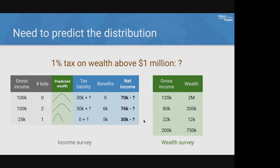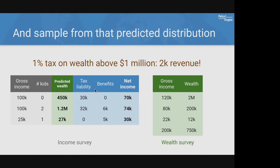What we really want is to estimate the distribution — the conditional distribution of wealth given the features you have. You predict some bell curve, possibly skewed or with spikes, based on the wealth survey. If you then sample randomly from that predicted distribution, you get predicted wealth values that vary: some households fall below the threshold, some fall above, capturing records that differ from the mean.